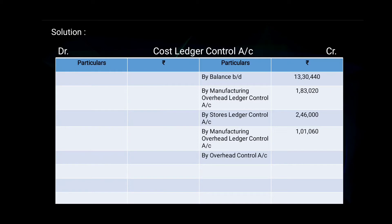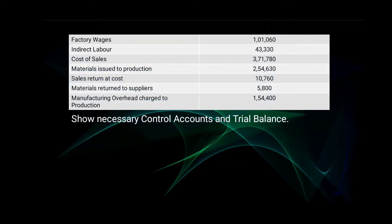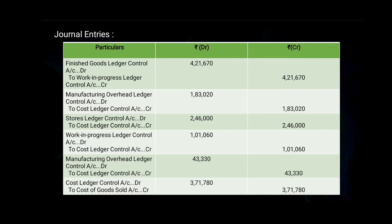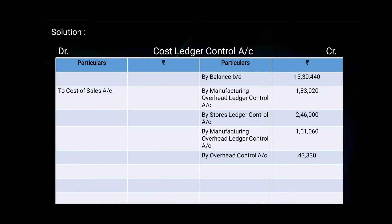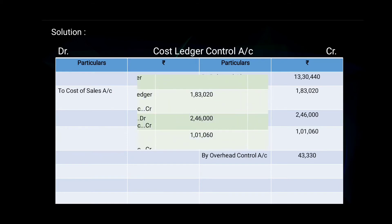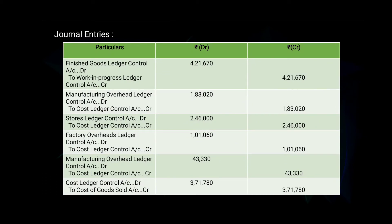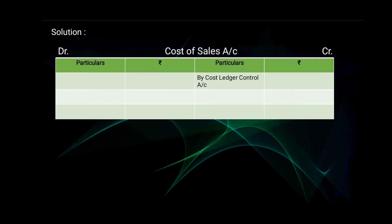The second effect for indirect labour is given in Cost Ledger Control Account as 'by Overhead Ledger Control Account — 43,330.' Next, cost of sales — 3 lakh 71,780. The journal entry was Cost Ledger Control Account debit, to Cost of Goods Sold — 3 lakh 71,780. The second effect is given in Cost of Goods Sold Account as 'by Cost Ledger Control Account — 3 lakh 71,780.'